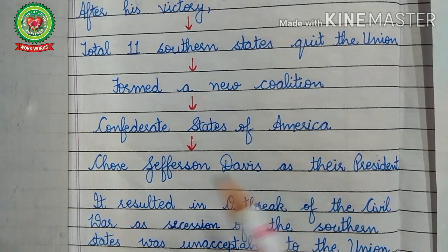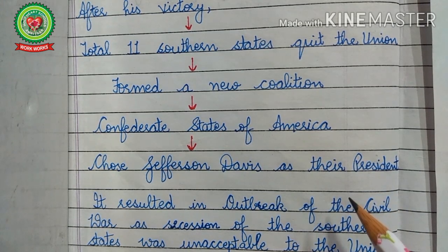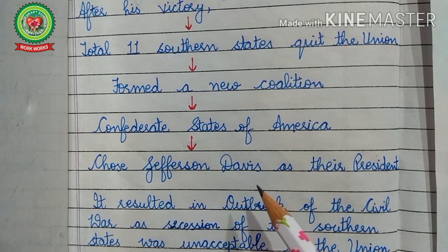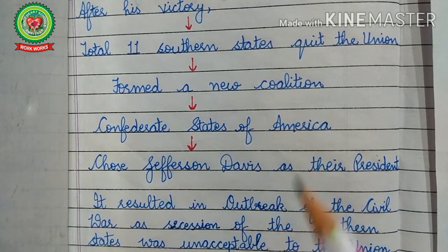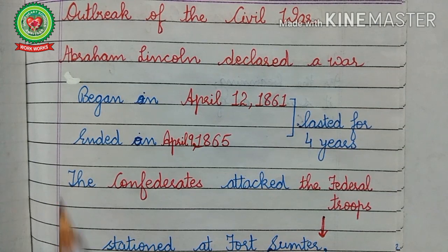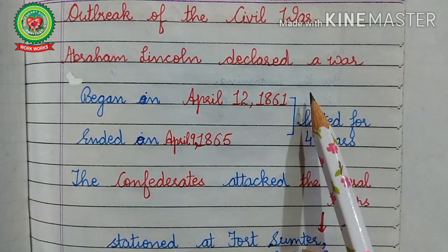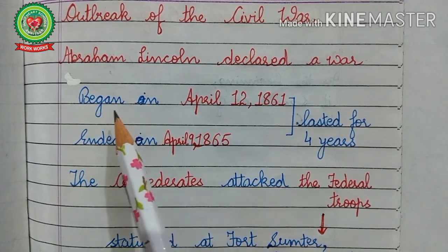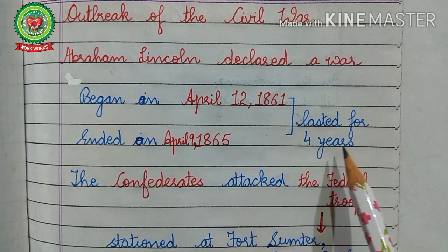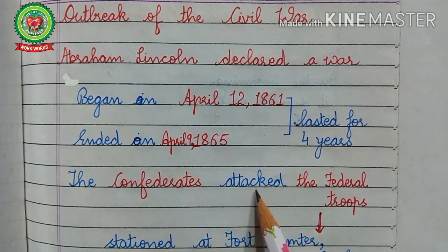After forming the Confederate States of America, they chose Jefferson Davis as their president. That means Abraham Lincoln was president of the northern states and Jefferson Davis was president of the Confederate States of America. Finally, this resulted in the outbreak of the Civil War, as the secession of the southern states was unacceptable to the Union. Abraham Lincoln declared war, and the war began on April 12, 1861, lasting four years and ending on April 9, 1865.